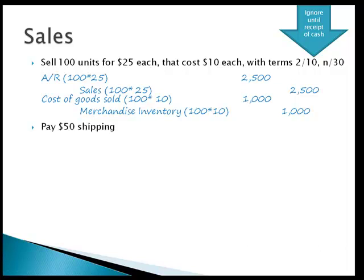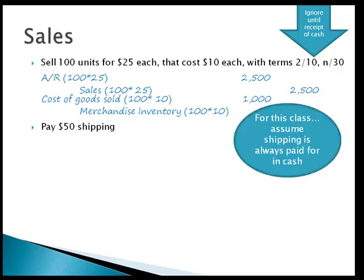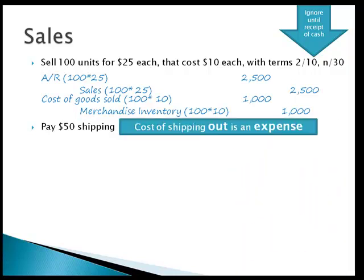If we pay for shipping out, assume for this class all shipping is paid to a third party in cash. The cost of shipping out is just an expense — a cost of doing business. So we debit delivery expense and credit cash.